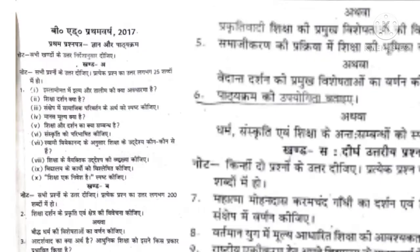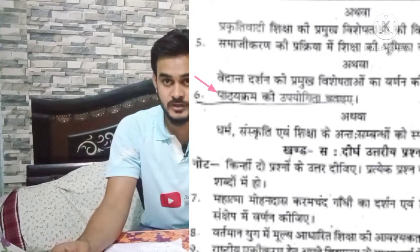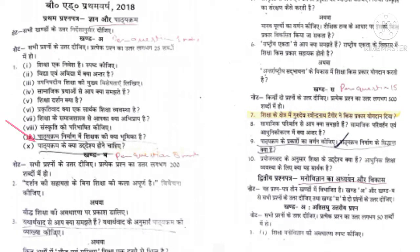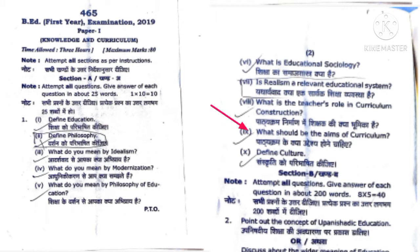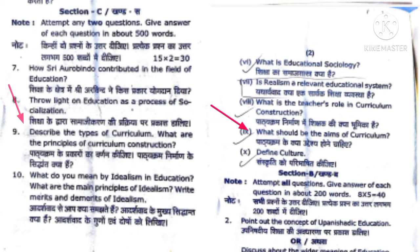In 2017, one question appeared: 'State the utility of curriculum' — that is, Use of Curriculum, which you can also call Objectives of Curriculum, as both are quite similar. In 2018, the question was: 'What are the objectives of curriculum?' Also in 2018, another question asked was about types of curriculum and principles of curriculum construction. Moving to 2019, the questions were: 'Aim of Curriculum' and again 'Types and Principles of Curriculum Construction.' These same questions were being repeated.